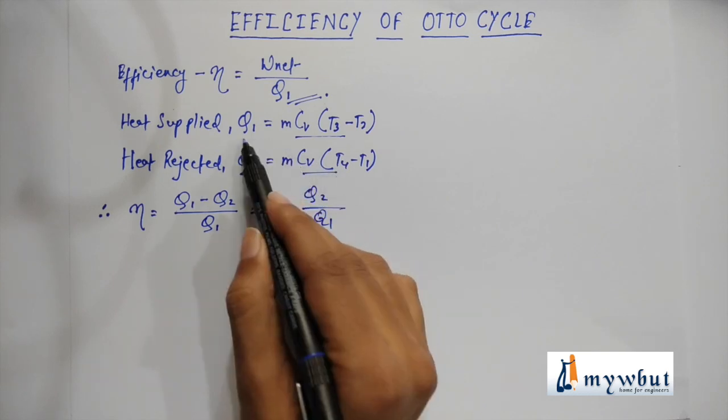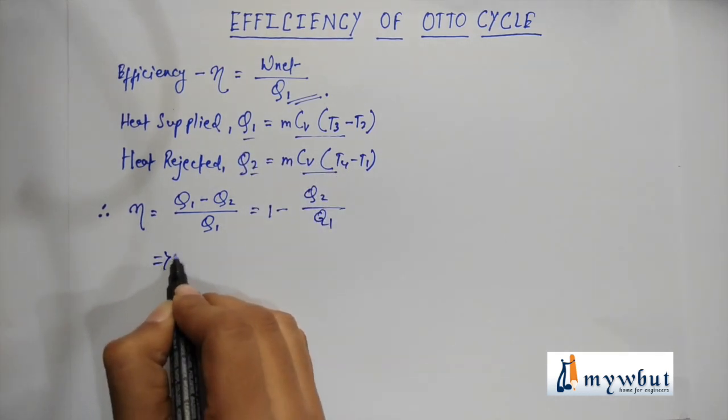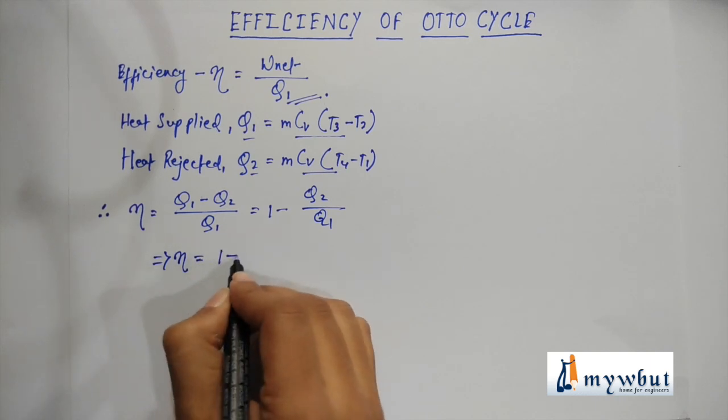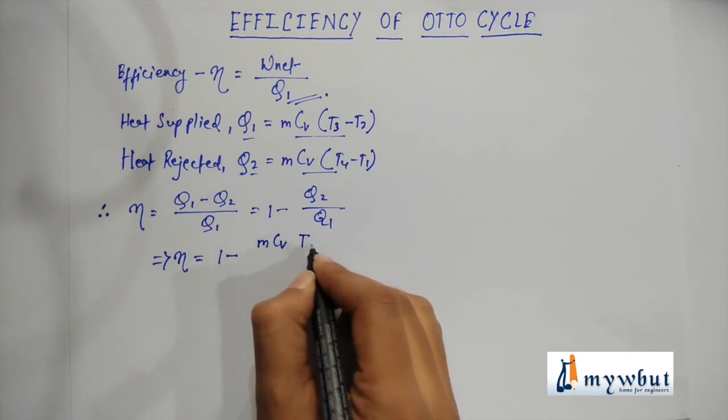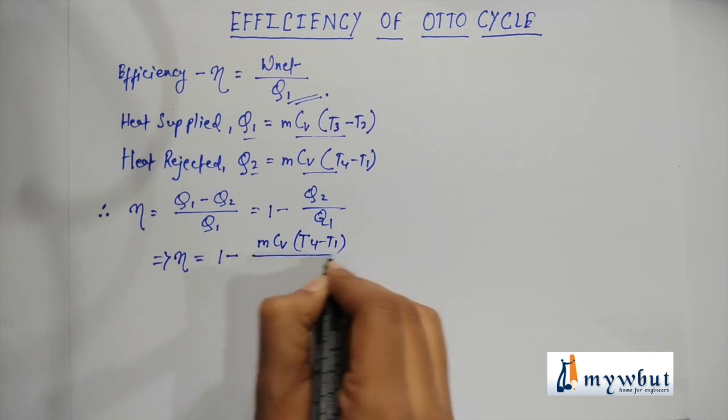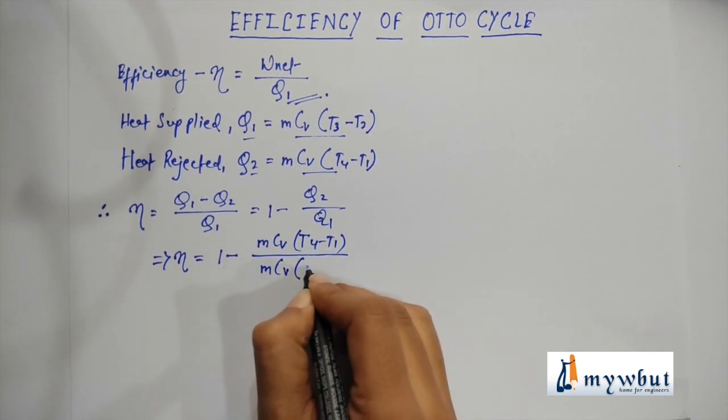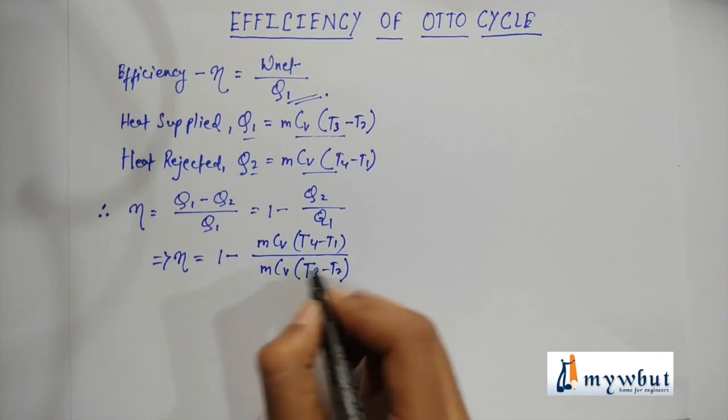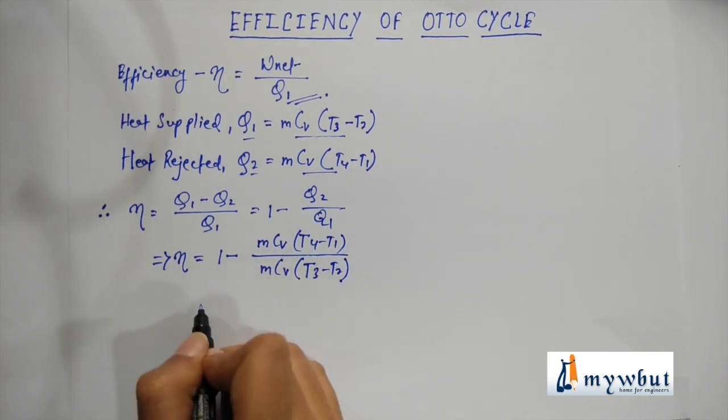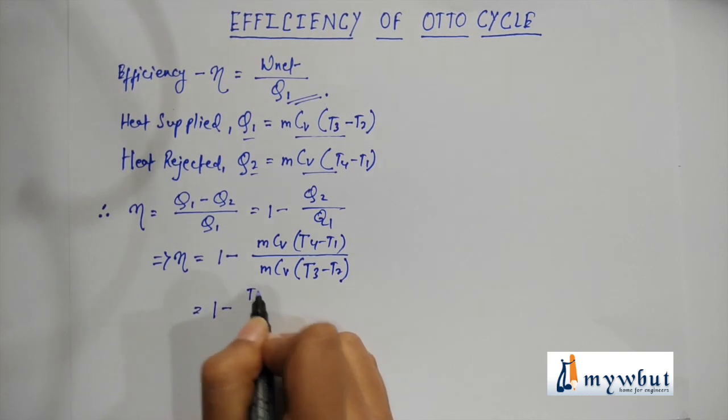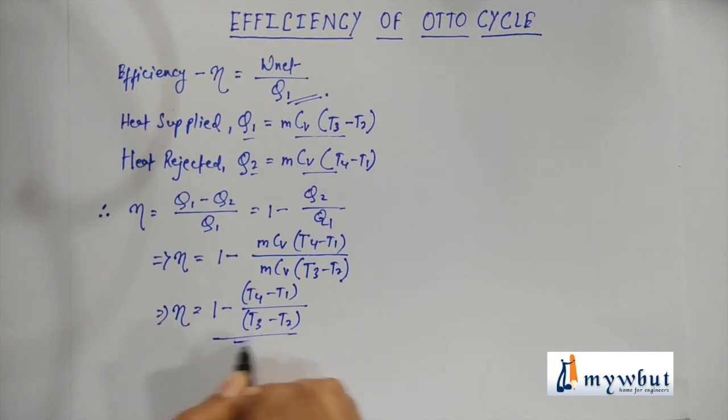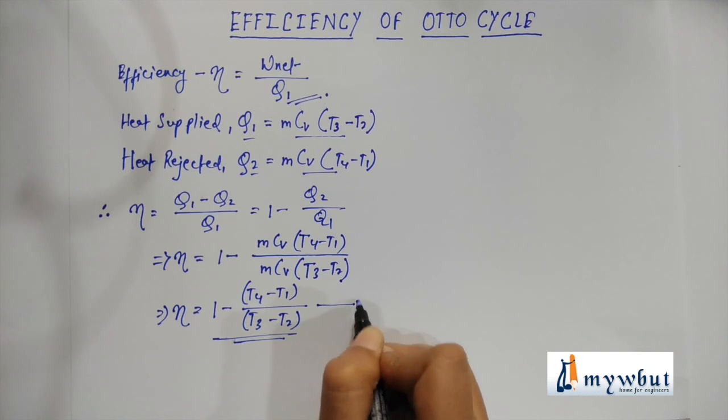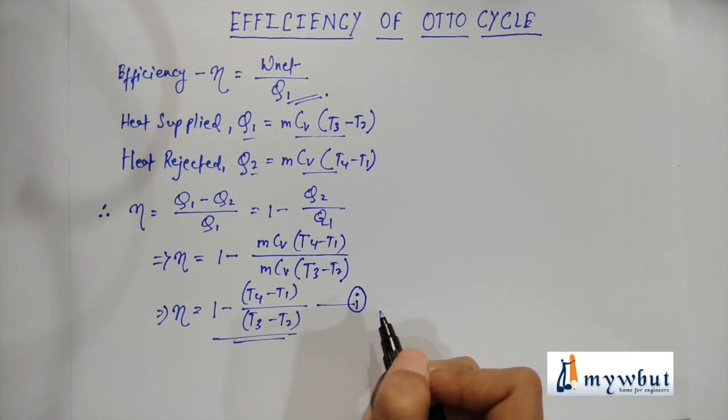Here m Cv gets cancelled out, and the final equation comes out to be 1 minus T4 minus T1 by T3 minus T2. That is the expression for efficiency. Let us consider this equation as equation number 1 to proceed further in this process.